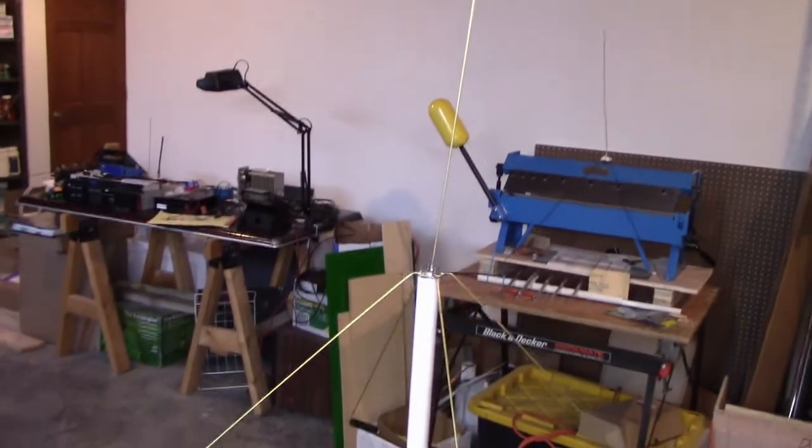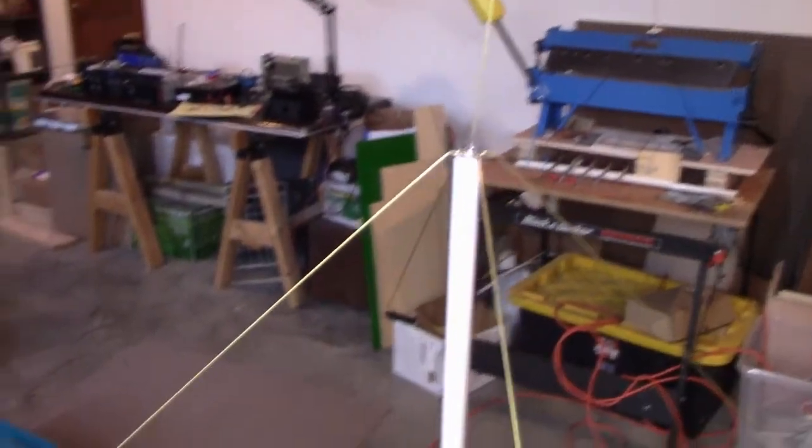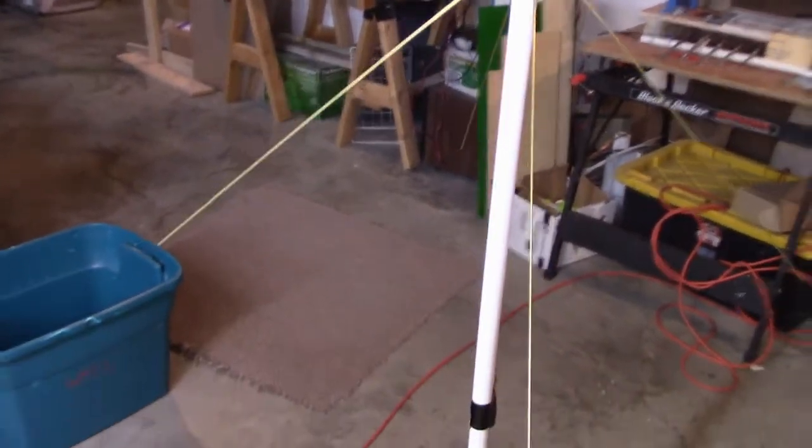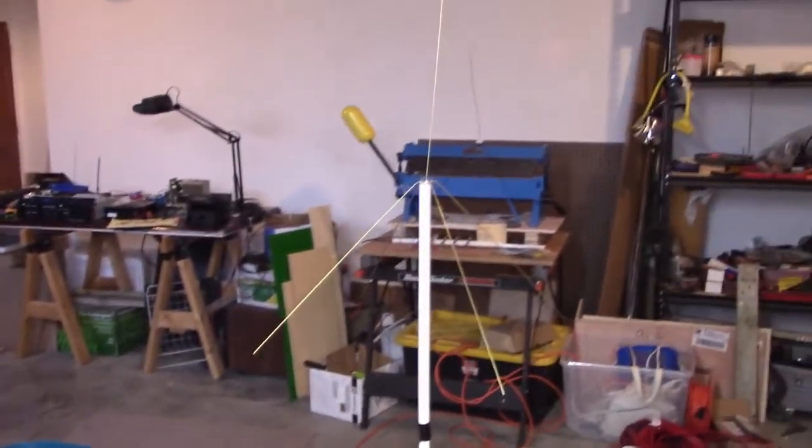It is complete. We have our vertical and the radials. And it is just a thing of beauty. Look at that. So there you have it. We've built a very, very simple ground plane antenna for use of the 2 meter amateur radio band, 144 to 148 megahertz.